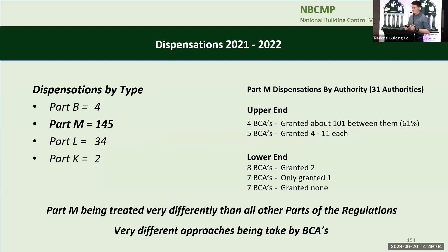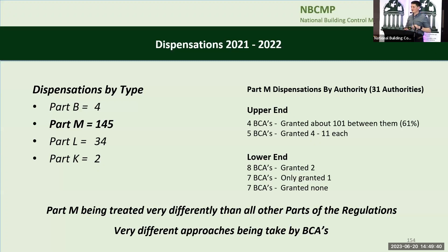Over the last two years I did a quick review of dispensations applied for and granted. By type: there were 4 dispensations from Part B — which is strange because B1 to B5 covers adequate means of escape. Are you saying that now has to be inadequate means of escape? Part M had 145 dispensations applied for and granted. Part L had 34 and Part K had 2. From those stats alone you can see that Part M is being treated very differently to the other requirements of the building regulations — possibly still because of the hangover from Part M 2000, where we think it's access for people with disabilities. It's not.